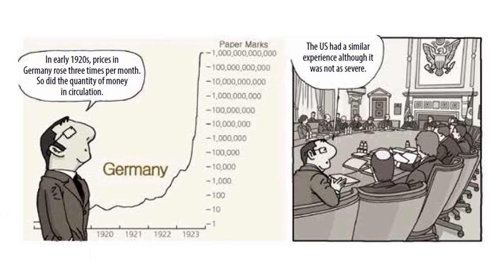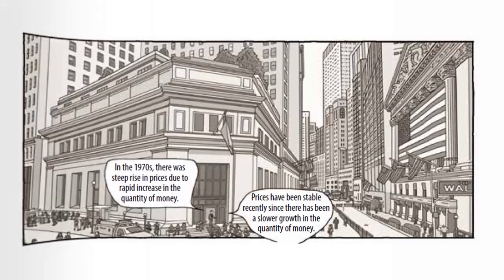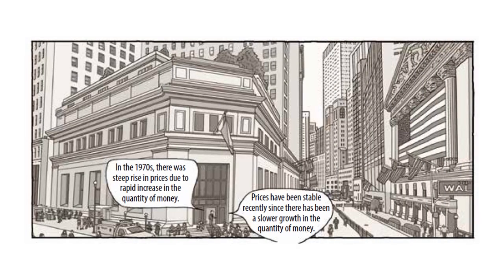Excessive or persistent increases in prices are almost always caused by an increase in the money in circulation. In the early 1920s, prices in Germany rose three times per month — and so did the quantity of money in circulation. The US had a similar experience in the 1970s, when there was a steep rise in prices due to a rapid increase in the quantity of money. Prices have been stable recently since there has been a slower growth in the quantity of money.